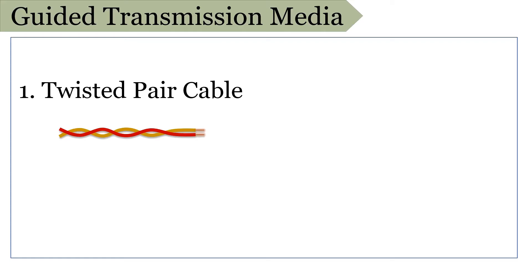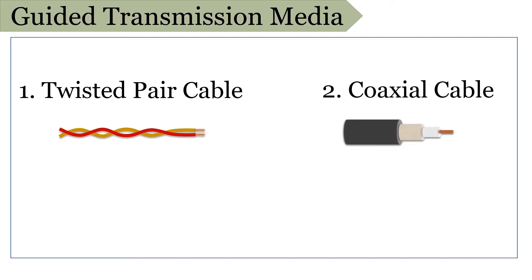Compared to other guided media, the twisted pair cable has low bandwidth and provides less protection from interference. The next one is coaxial cable. Here, an insulated copper wire is further encased with a metallic braid which acts as a second conductor, completing the circuit and also providing protection against noise. This structure is further encased with an insulating material. The coaxial cable carries signals of higher frequency.